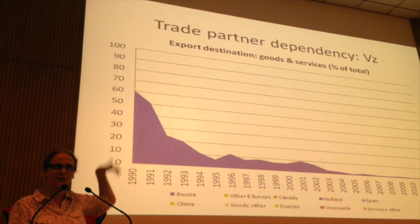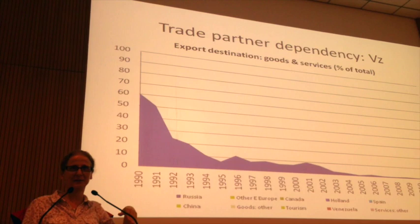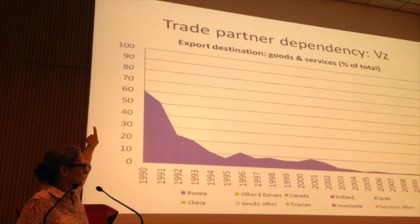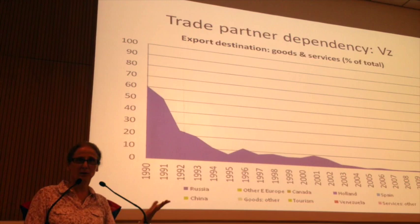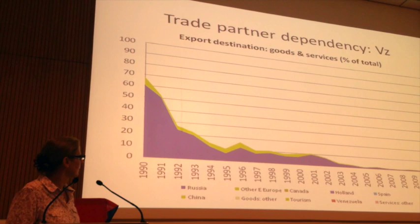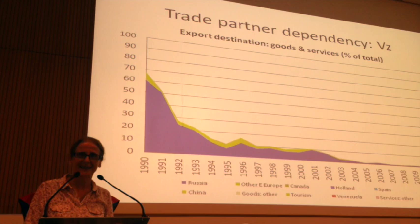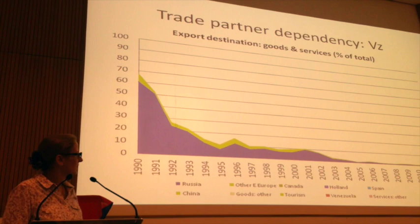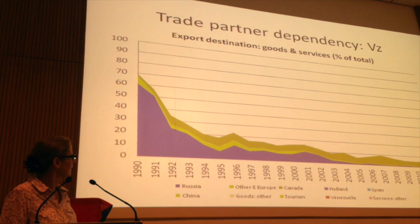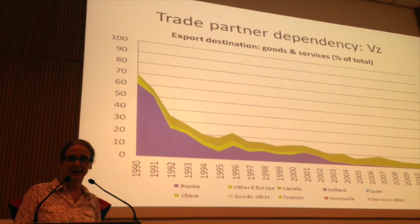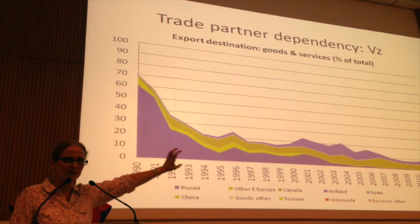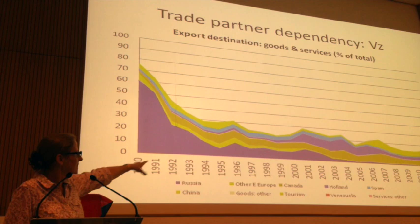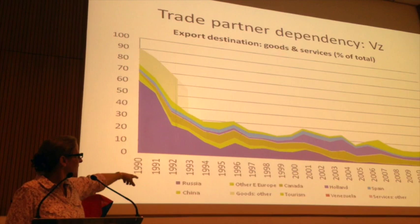This slide shows trade-partner dependency. The axis goes up to 100 as a share of total trade accounted for by each partner. You can see Russian trade diminishing to very little. Combined with other Eastern Europe, in 1990 they represented maybe 70% of total trade in goods and services — a huge dependency that Cuba lost. Then Canada became more important, largely due to nickel. Holland saw a surge when nickel started going through there. Spain has always been there. China has been increasing recently, also taking the nickel instead of Holland.